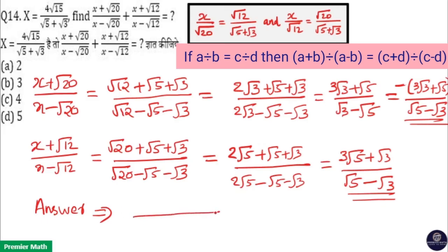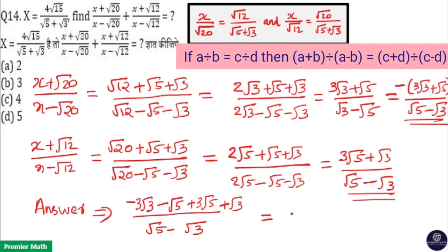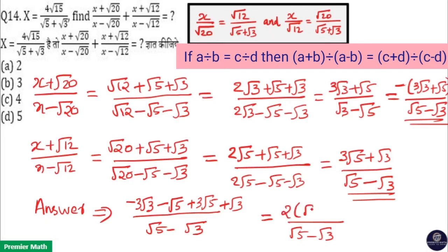Now adding both terms with common denominator (√5 - √3): the numerator is (-3√3 + √3) + (-√5 + 3√5), which equals -2√3 + 2√5. Factor out 2: numerator is 2(√5 - √3) divided by (√5 - √3). The (√5 - √3) cancels, so the answer is 2. Option A is the answer.